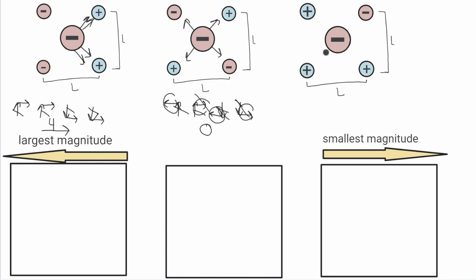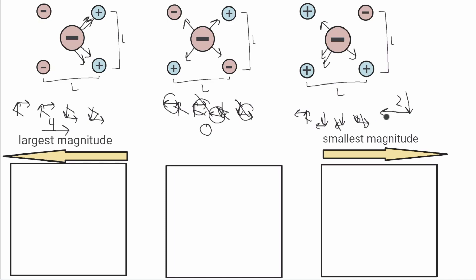Now looking at the one all the way on the right, it's going to be attracted to all three positive particles and repelled from the one negative particle. One arrow goes up and to the left, two arrows go down and to the left, and one arrow goes down and to the right. There are three arrows pointing down and one pointing up, so that cancels one down arrow, leaving two units of force going down. There are also three going to the left and one going to the right, so you get two units going to the left.